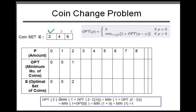How did we compute this? opt(2) is computed using the formula: min of 1 + opt(P − C_i). Here P is two, so two minus C_1, where C_1 is two. When we reach four we can use two and four; when we reach six we can use all three coins. Since we've only reached the first coin denomination, we just use two.